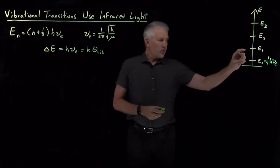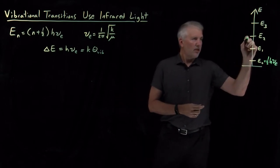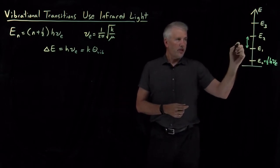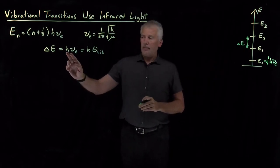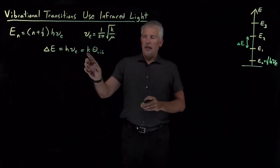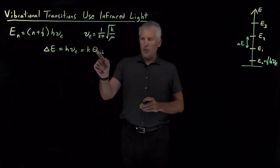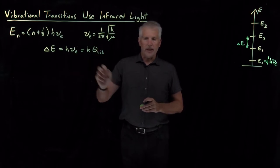And the spacing between each one of these levels, regardless of whether it's the first pair, the second pair, the third pair, each of these energy levels is separated by the same gap, h times this vibrational frequency, or if we prefer k, Boltzmann's constant, times the vibrational temperature, where we have defined the vibrational temperature as h nu divided by k.